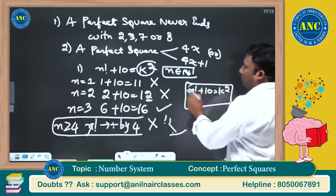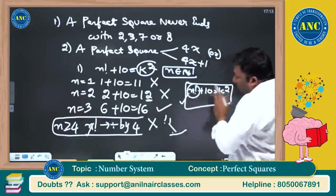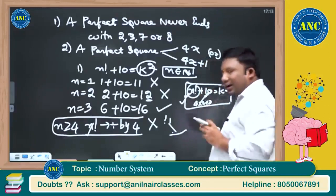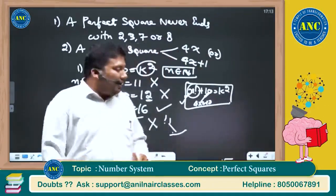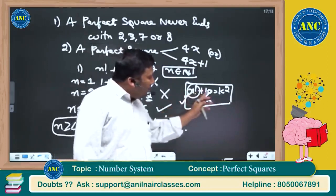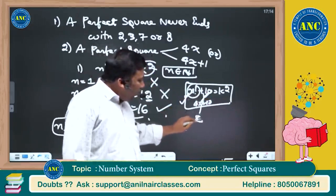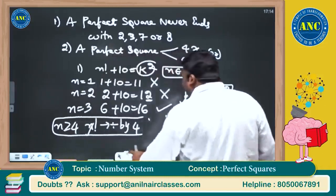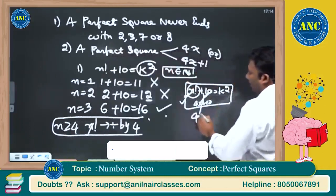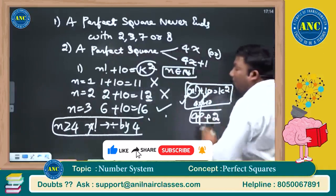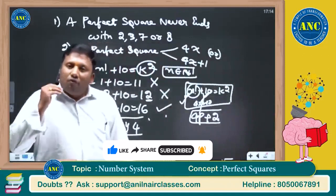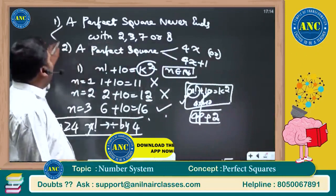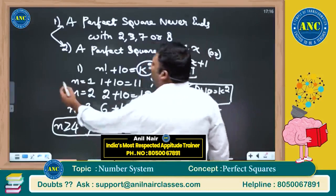So for n greater than or equal to 4, in the equation n factorial plus 10 equals k squared: n factorial is divisible by 4, and 10 gives remainder 2 when divided by 4. So the left hand side is of the form 4 times something plus 2. But the right hand side, k squared, is a perfect square, which must be of the form 4k or 4k+1. So the equation cannot hold. This is a classic question using these two properties.